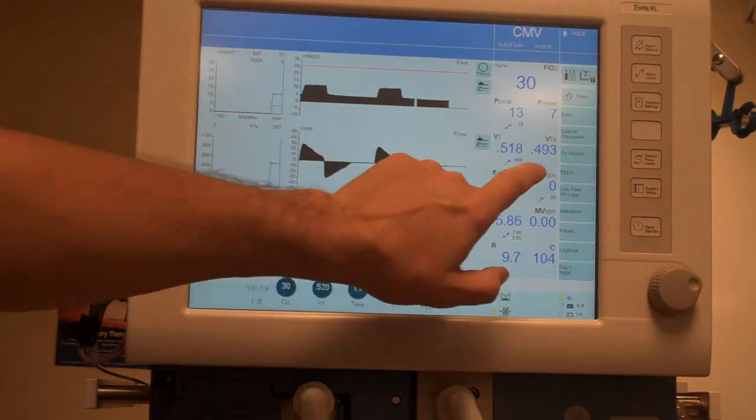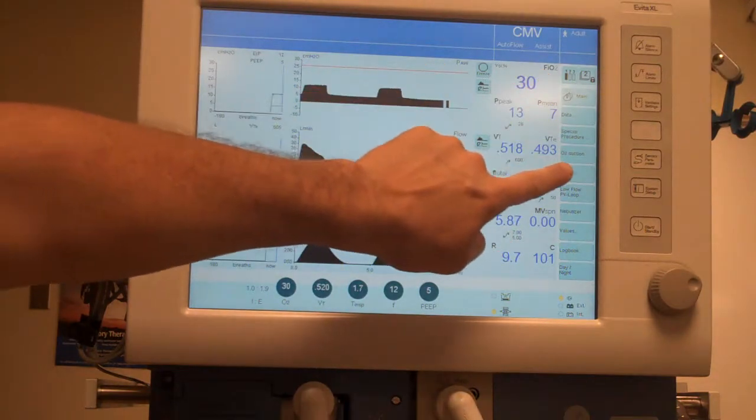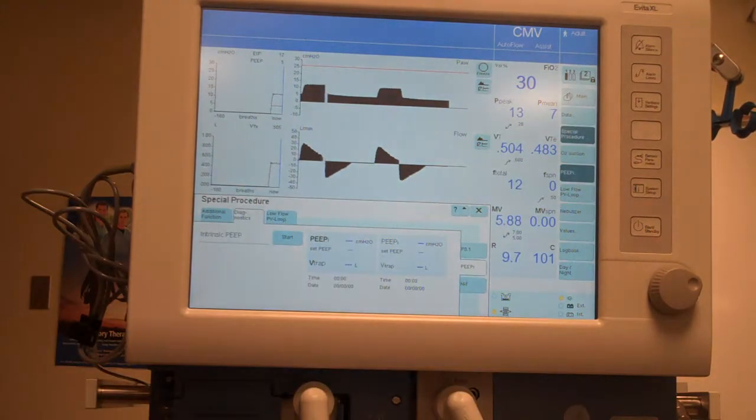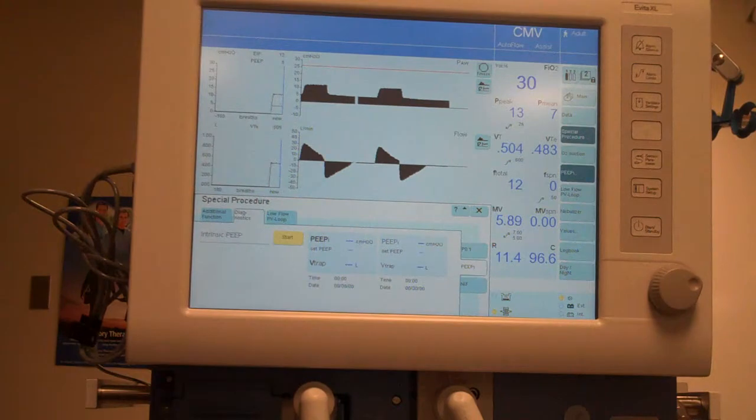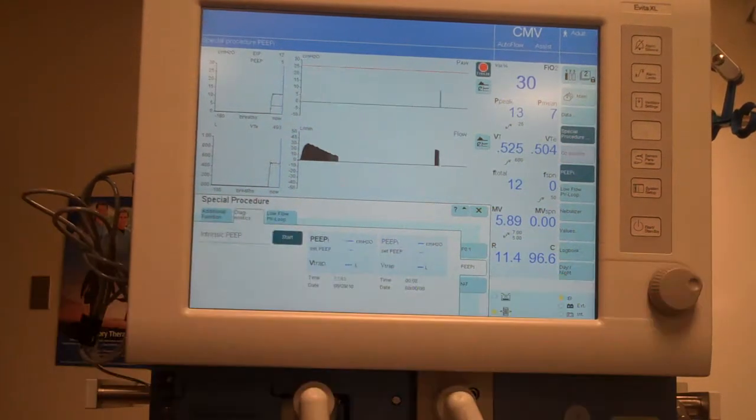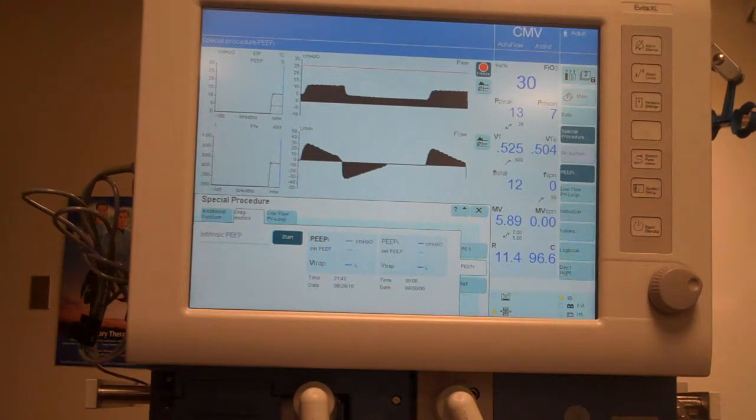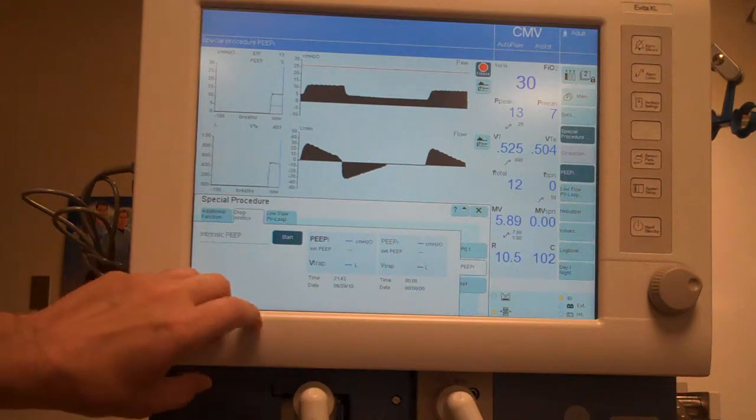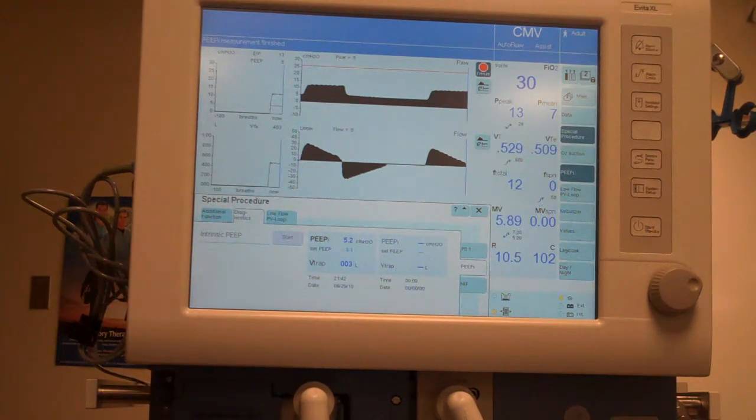Draeger ventilating here in PRVC. We can see there is a peep eye button on the side, and simply by pressing the start button and clicking it, it will go ahead and do an auto peep maneuver and display for us the amount of auto peep that is present.